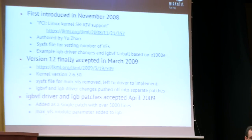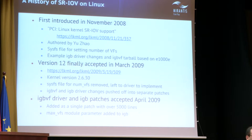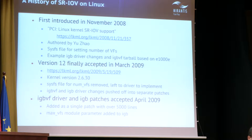Brief history: the first patch set for SRIOV was actually introduced back in November of 2008. The author was Yu Zhao. One of the things was we had a sysfs file in the original implementation for setting the number of VFs. But by the time things got accepted in version 12, the sysfs file was actually dropped for SRIOV num_vfs, because the general consensus from the community was they didn't want it that way — people were talking about using Netlink instead. But the problem is SRIOV is a PCI specification — why should a storage controller have to go through Netlink if it wants to set up the VFs?